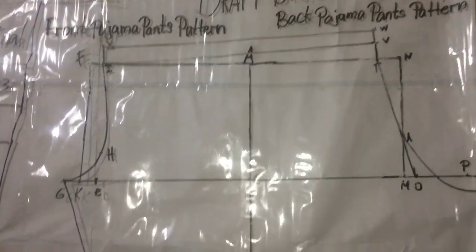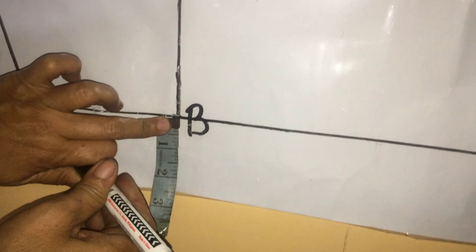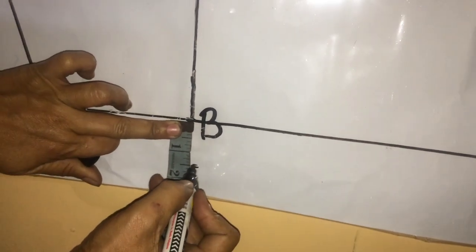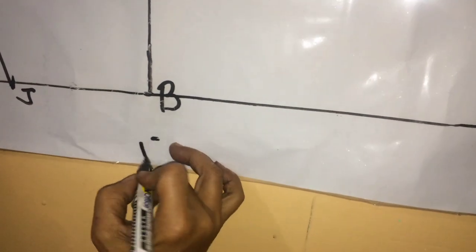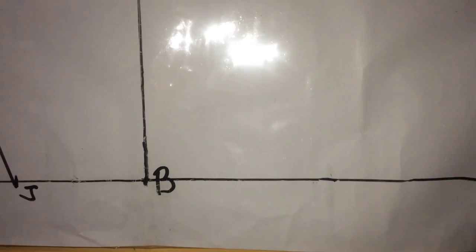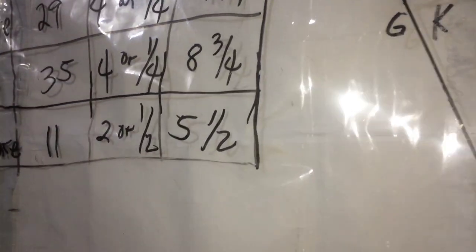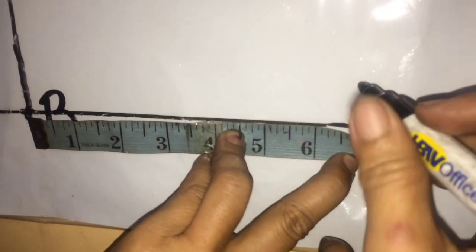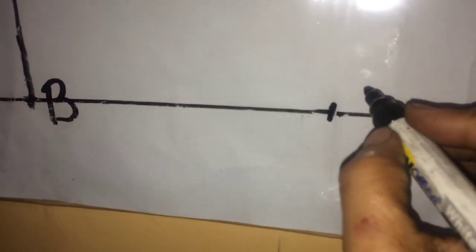From point B, measure one and one half. Mark Y. From point B, measure one half of bottom plus one inch. One half of bottom, five and one half. Plus one inch, six and one half. Mark Q.